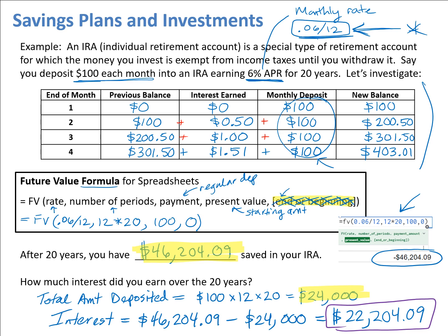This is why people encourage you to start saving early and make regular deposits into retirement funds. As time goes on, even a small monthly deposit will grow substantially. The interest keeps building, and eventually your interest earned may even outpace your deposits. Starting early to save for retirement can be really helpful, even if you just do a little bit at a time.